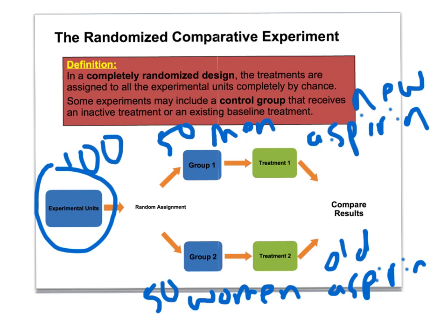I apply my two treatments, get my results, and sure enough, group 1 got rid of their headache five minutes faster than group 2. What's the problem? Well, I don't know if it's because of the aspirin or because I only had men in one group and women in the other. Maybe my aspirin works better with men than with women, and that's why it did better. Or maybe there's something in men's bodies that allows them to get rid of headaches quicker, whether they had aspirin or not. So I can't tell if it's the aspirin or if it's the men versus women.